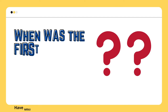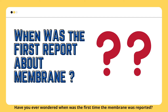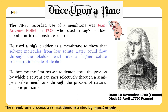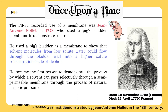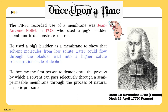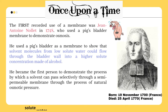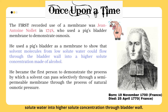Have you ever wondered when was the very first time the membrane was reported? The membrane process was first demonstrated by Jean-Anthony Nollet in the 18th century. Nollet, who was French, used a pig's bladder to show the flow of solvent molecules from low solute concentration into higher solute concentration through the bladder wall.